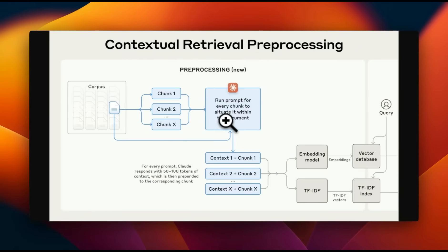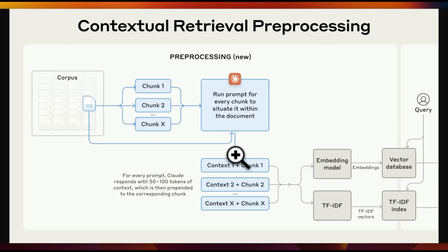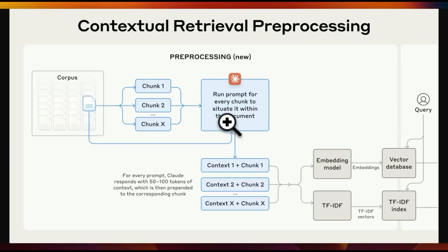In practice, this is how it's going to look. You take a single PDF file or document from your corpus, convert it into chunks, then take one chunk at a time and run that chunk through the prompt along with the original document. This generates contextual information for each chunk. You combine a given chunk with the relevant contextual information and pass it through an embedding model. Those embeddings are stored in a standard vector database. On the other hand, you also update the BM25 index using TF-IDF — term frequency inverse document frequency — which is the keyword-based search mechanism. As a result, you are adding 50 to 100 tokens to each chunk.